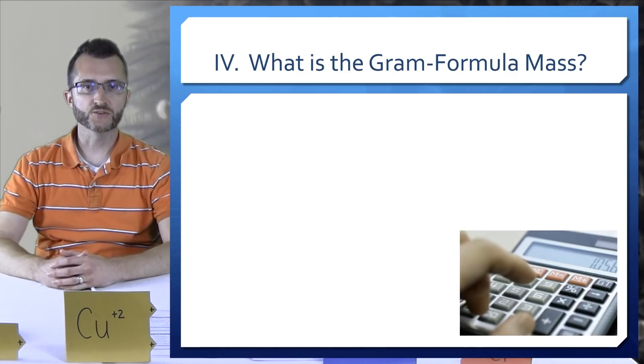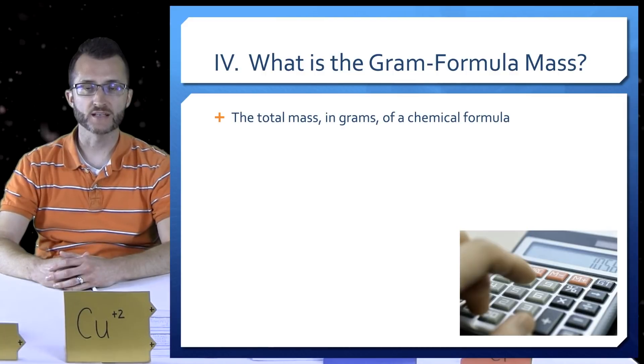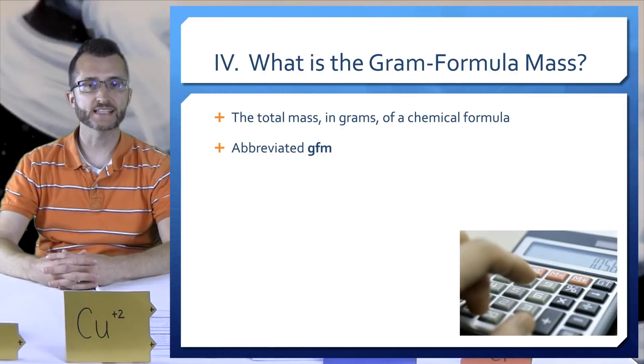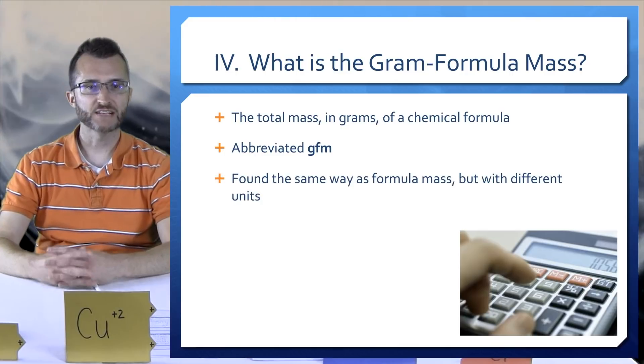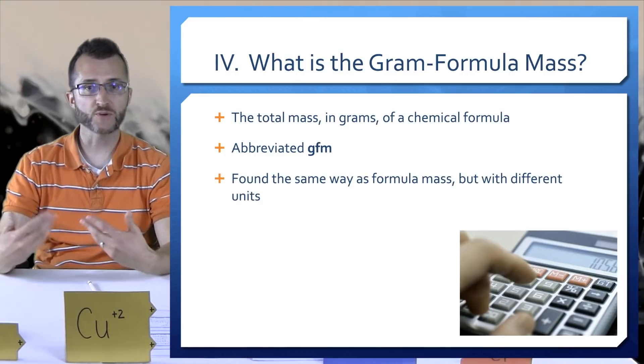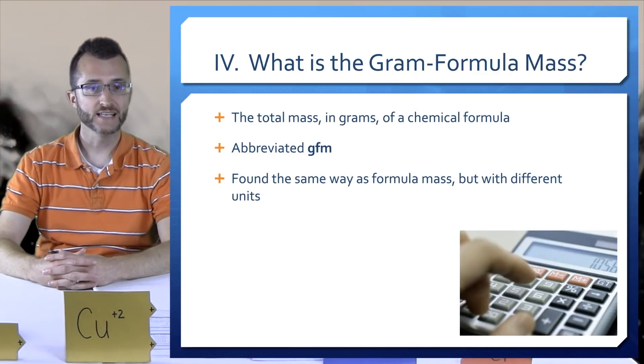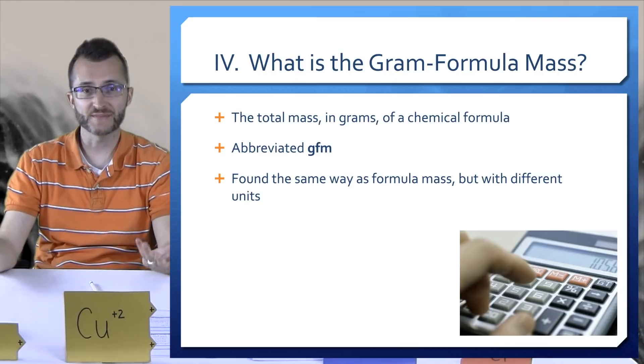What is the gram formula mass? It's the total mass in grams of a chemical formula. We often abbreviate this as GFM. Now, it's found the exact same way as formula mass, but with different units. So process-wise, you're going to do the same thing we've been doing throughout this lesson. And you're just going to change the units to grams instead of U.